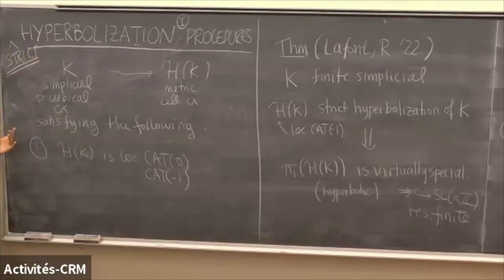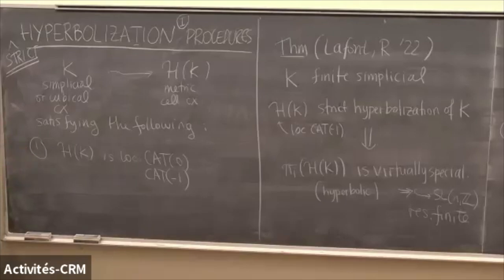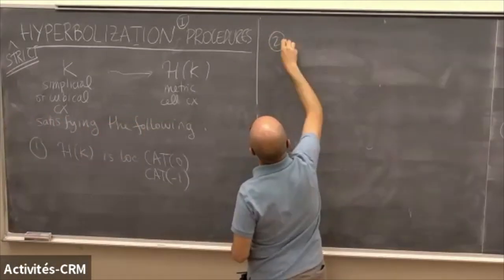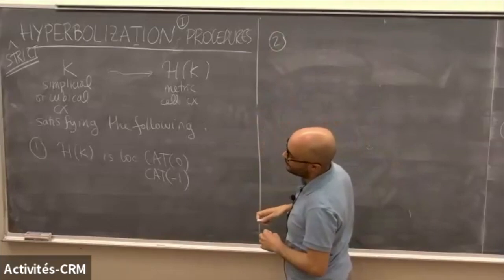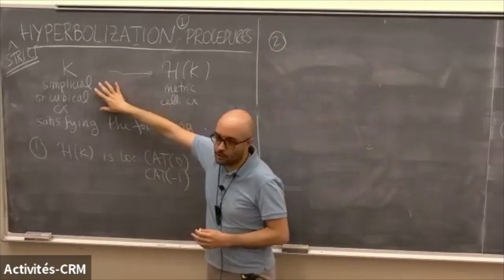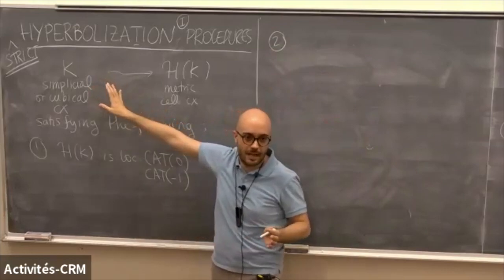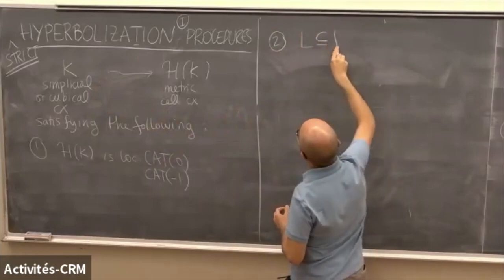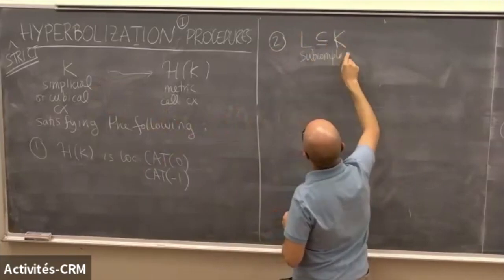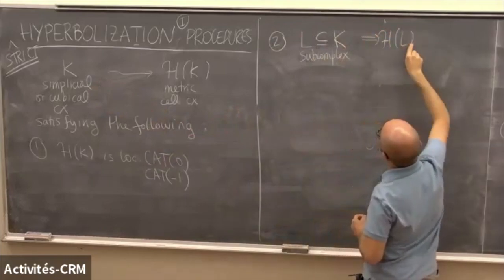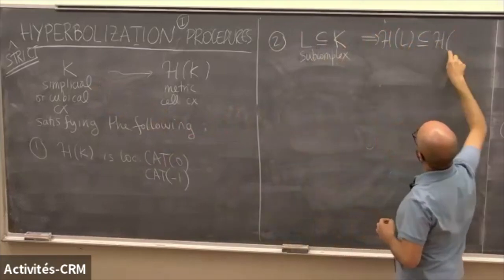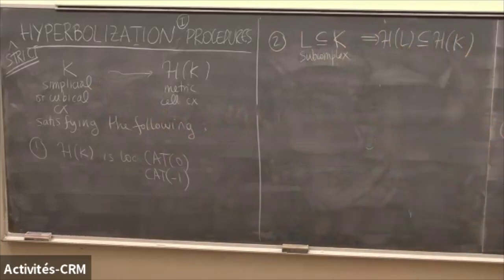The second requirement is consistency in your construction. Since a simplicial or cubical complex comes with subcomplexes, if I have a subcomplex of my complex, I want the hyperbolization of my subcomplex to sit inside the hyperbolization of my complex as a subspace. So there should be consistency on lower-dimensional skeleta — many procedures are defined by induction on the lower-dimensional skeleta.